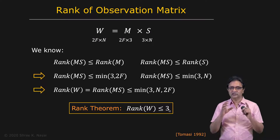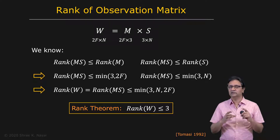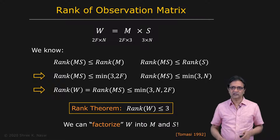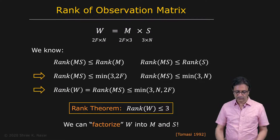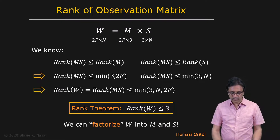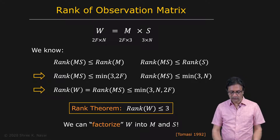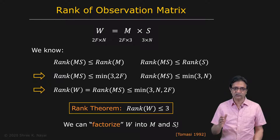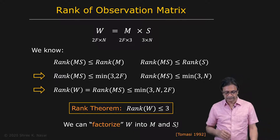It is this rank constraint that makes it feasible for us to factorize the observation matrix W into its two components M and S. Once we've done that, we have solved the structure from motion problem.